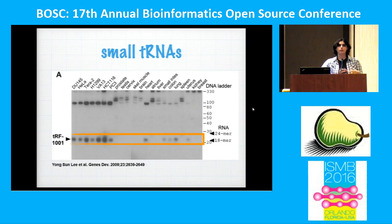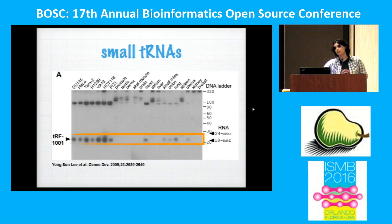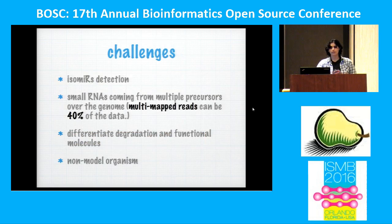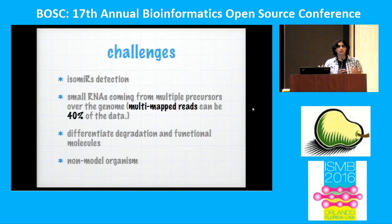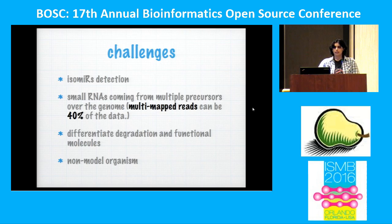This is why sequencing small RNA is pretty important — you can see more than just microRNAs and detect anything that is in your cells. We try to address some of the challenges in small RNA analysis. One is isomiR detection: I want to have all possible sequences for each microRNA, not just one, because it's important to know exactly what is expressed.